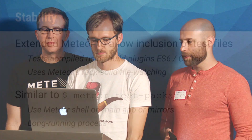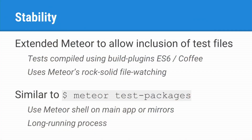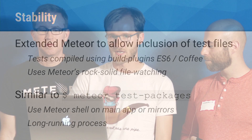In doing that, we use the rock solid features of Meteor to be stable. The way that you start the mirrors now is the same as the test packages. What that means is you have a long-running process that runs side by side with your normal Meteor dev app, and you're not constantly restarting the process, which led to a lot of stability problems in the past.